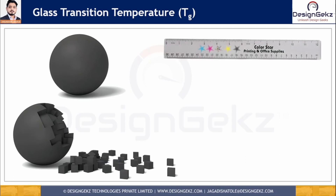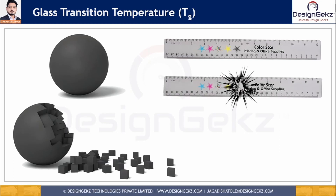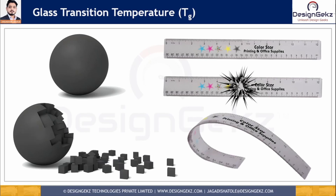Consider one more example of an acrylic ruler. At normal room temperature, if we try to bend the acrylic ruler, it will not bend — it will crack and break. But if we heat the acrylic ruler to 100 to 115 degrees Celsius, it will become soft and flexible and we will be able to bend it. So why does the rubber ball become brittle at minus 70 degrees Celsius, or why does the acrylic ruler become soft above 100 degrees Celsius?